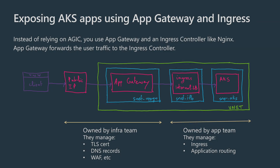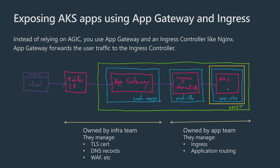The second option to integrate an Application Gateway with an AKS cluster is to not use AGIC at all, but instead replace it with a real NGINX ingress controller. In this approach, client traffic goes first through the Application Gateway, then to the NGINX ingress controller, and then the NGINX controller routes the traffic to the AKS pods. This adds another hop for user traffic, but the NGINX ingress controller can scale out to handle that traffic.